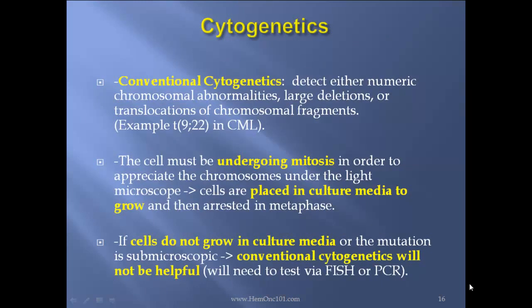Cytogenetics: conventional cytogenetics detect either numeric chromosomal abnormalities, large deletions, or translocation of chromosomal fragments — for instance, translocation 9;22 in CML. These cells must be undergoing mitosis; the cells must be undergoing mitosis in order to appreciate the chromosomes under the light microscope. The cells are placed in culture media to grow and then arrested in metaphase. If the cells do not grow in culture media or the mutation is sub-microscopic, conventional cytogenetics will not be helpful.